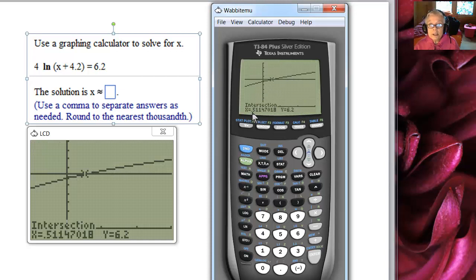The instructions say to round to the nearest thousandth. That means round to the third decimal place and the fourth decimal place will not cause the third decimal place to round up.